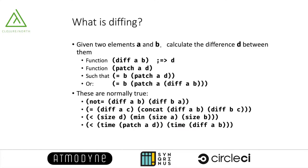Let's begin with a definition. What is diffing? Diffing is an operation: given two data elements A and B, calculate the differences D between A and B. It thus defines the pairs of functions diff and patch. Diff takes A and B and produces the differences D. Patch takes the original A and the differences D and gets back the original B.